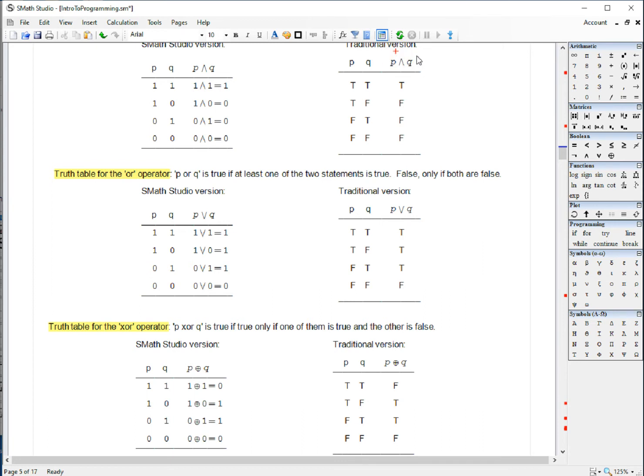And so, if we want to find out the truth value of P and Q, we find that both have to be true for the statement to be true. If one of them is false, then the statement is false. If both are false, then it is false. In SMASH Studio, the version will be presented like this.